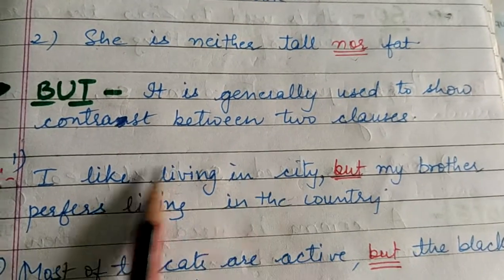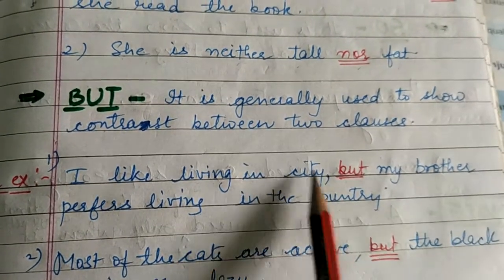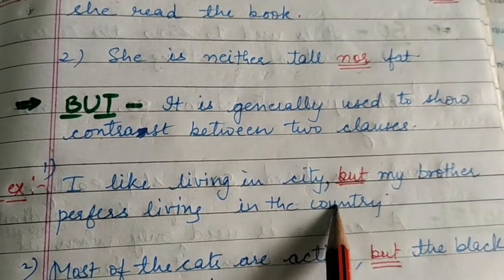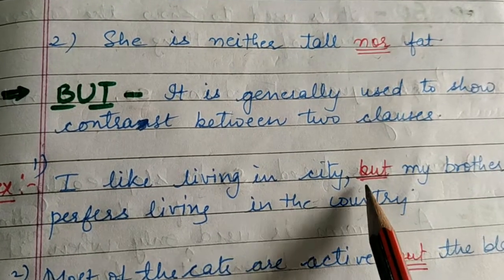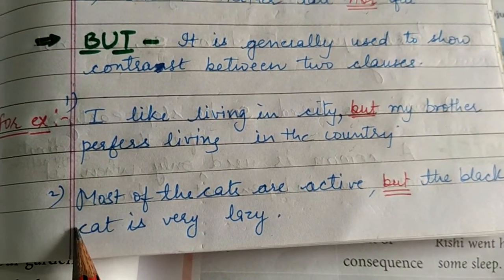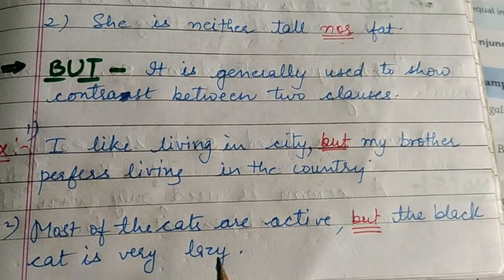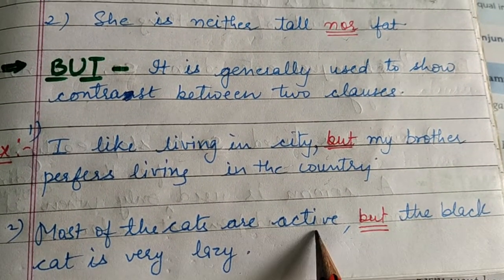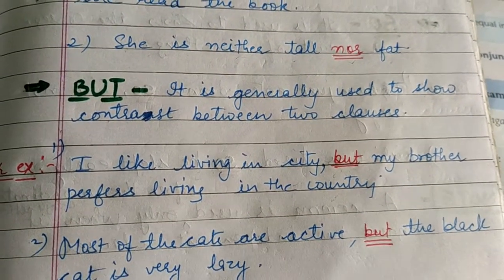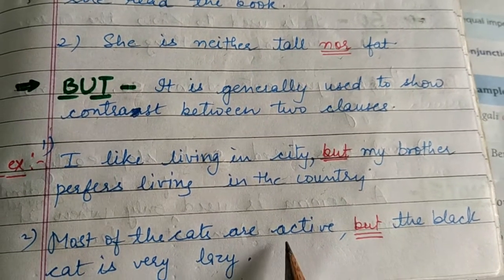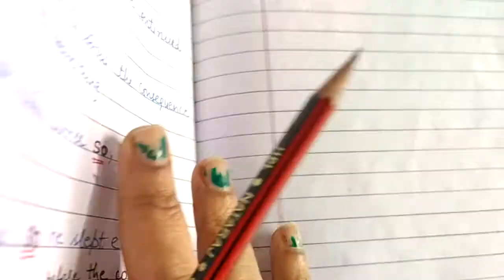Example: 'I like living in the city, but my brother prefers living in the country.' Mujhe city mein rehna pasand hai, but my brother prefers the country. City and country are opposite to each other, so to show contrast, hum 'but' ka use karte hain. Another example: 'Most of the cats are active, but the black cat is very lazy.' Saari cats active hoti hain, lekin contrast mein the black cat is lazy — opposite, so we use conjunction 'but' to join these sentences.